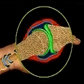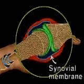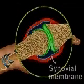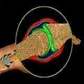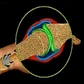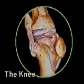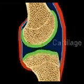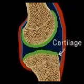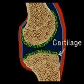Synovial or freely moving joints are composed of cartilage-tipped bones connected by ligaments. A membrane surrounds the space between the bones and contains the synovial fluid. This liquid lubricates a joint, allowing for smooth motion.